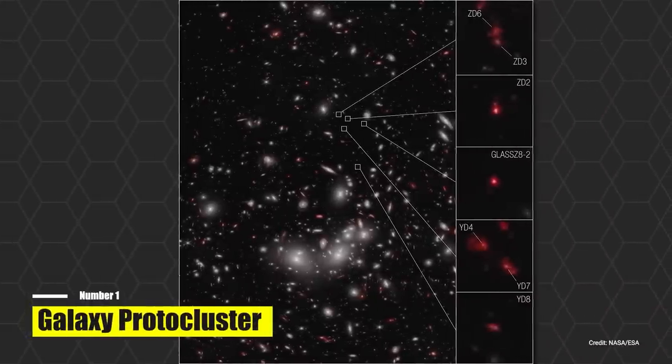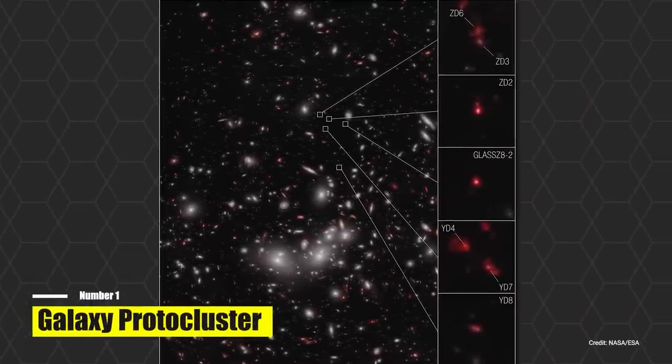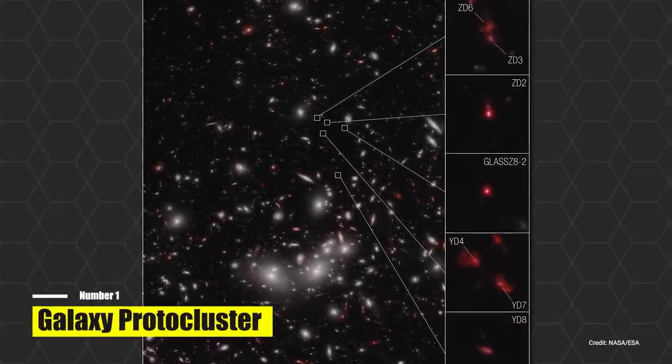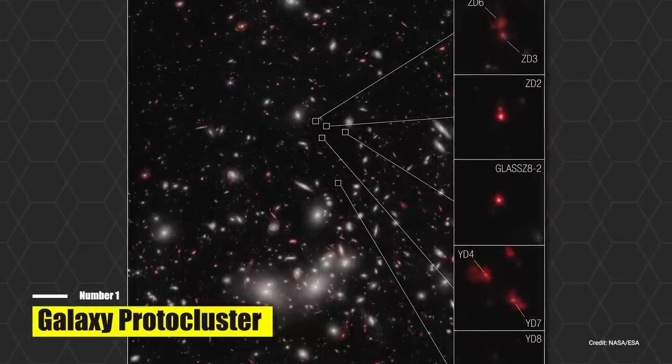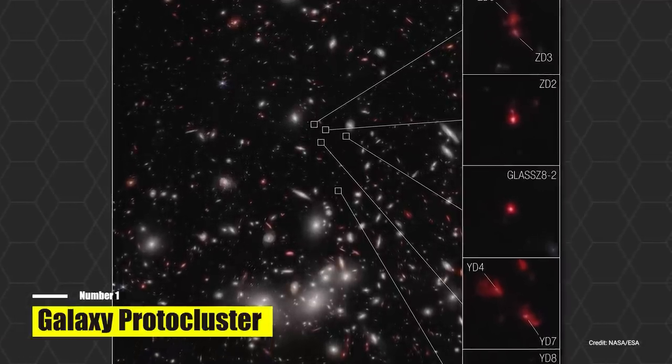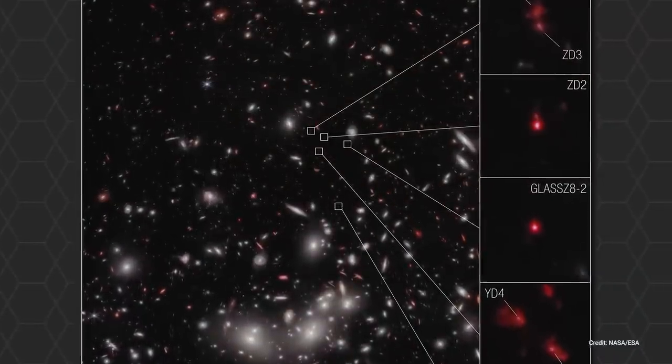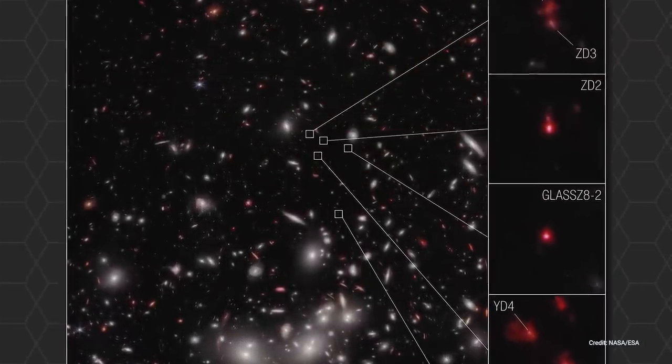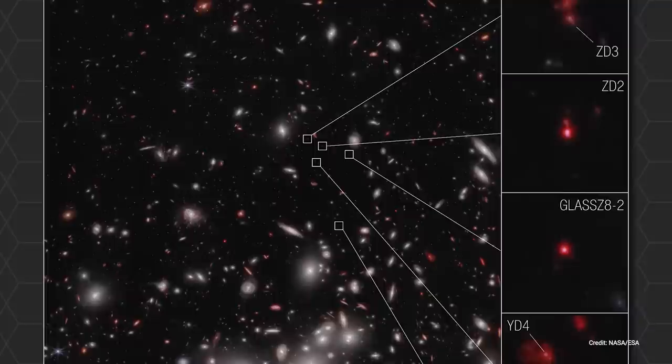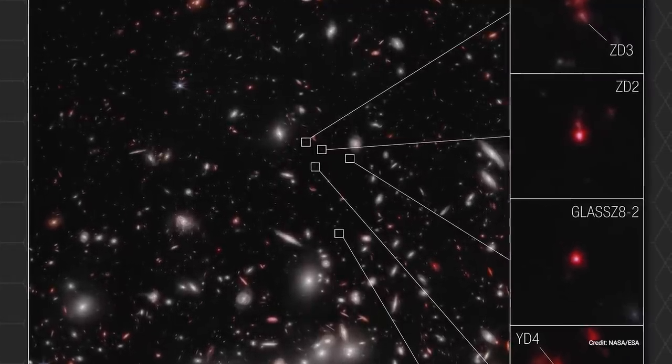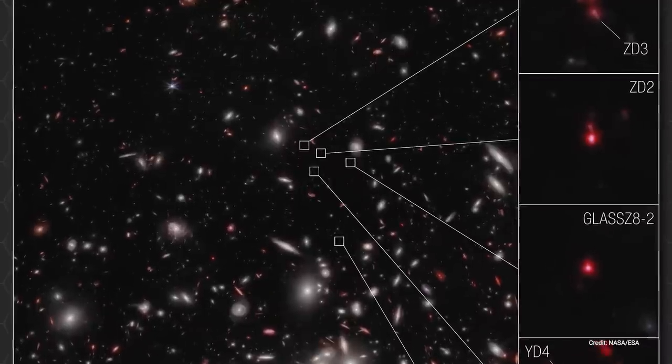Number 1. Galaxy ProtoCluster. Imagine peering into a celestial time capsule from 650 million years after the Big Bang, when the first galaxies were just starting to take shape. That's exactly what the image from the James Webb Space Telescope reveals. It shows seven galaxies that are so far away from us that their light is being stretched, or redshifted, to longer, redder wavelengths by the time it reaches us.